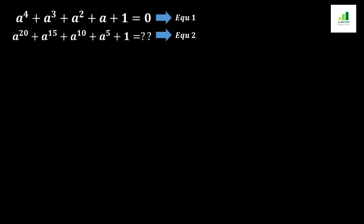Welcome to AMS. Today in this video we are going to solve a question. The given equation is a to the power 4 plus a cubed plus a squared plus a plus 1 equal to 0 — this is equation 1. Our required equation is a to the power 20 plus a to the power 15 plus a to the power 10 plus a to the power 5 plus 1 equal to what — this is equation 2.